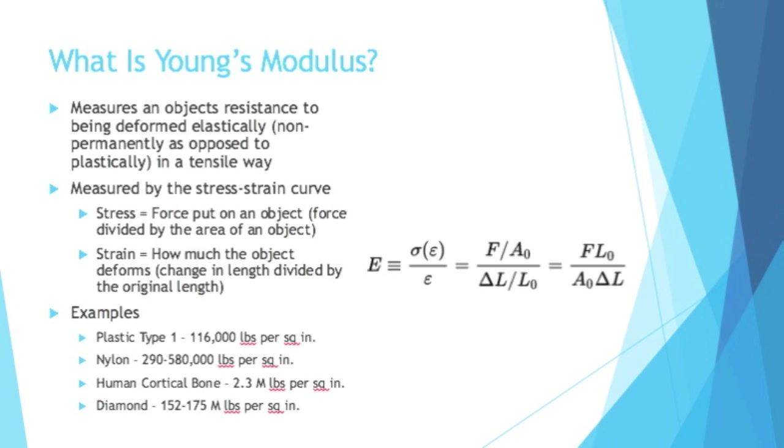It's measured by the stress-strain curve. Stress is the force put on an object, force divided by the area of an object. It's a cross-sectional force. Strain is how much the object deforms, change in length divided by the original length. So you put stress on an object, and because of that stress, the object experiences strain. So Young's modulus is literally a measure of the stress over the strain of an object. How much force it takes to make an object strain a certain amount.